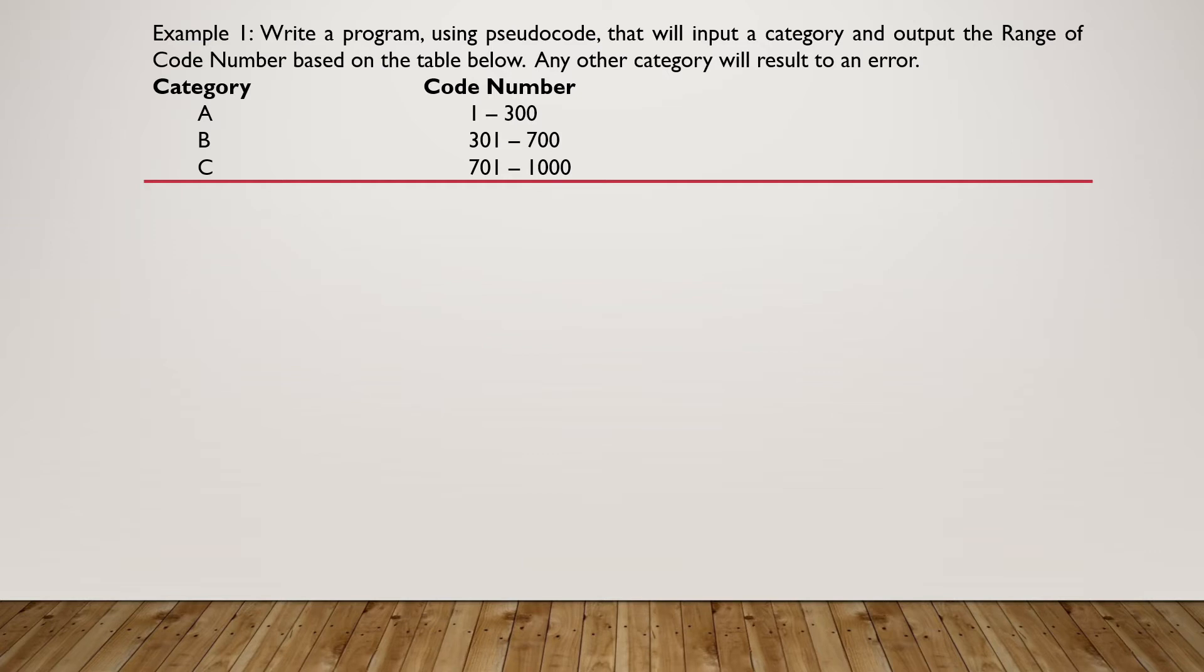Let us look at an example of how to make use of the Select Case Statement. Example 1, write a program using pseudocode that will input a category and output the range of code number based on the table below. Any other category will result to an error. So the first thing that we are going to do, we are going to input a category.